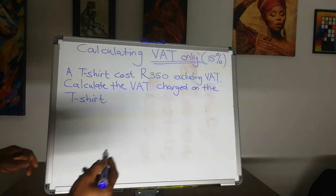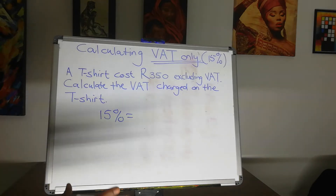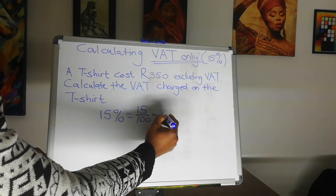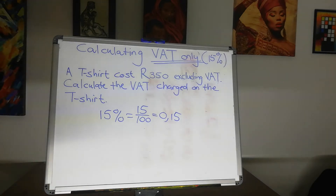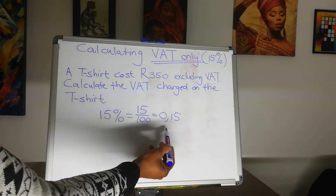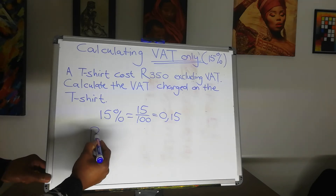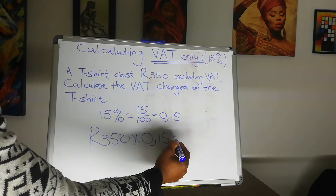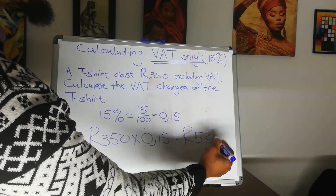Now let's begin. We know that it is 15%. So what we are going to do is a simple percentage conversion into a decimal value: 15 over 100, and that will give us 0.15. I find this step very effective because it does allow you to work easily within the calculation. Now that we have a factor that we are going to work with, which is 0.15, we can calculate the VAT on the T-shirt. So we say 350 rand multiplied by 0.15, and that is going to give us a value of 52 rands and 50 cents.